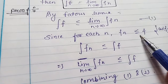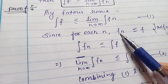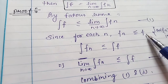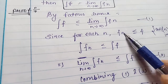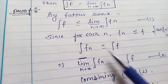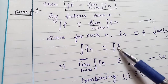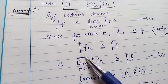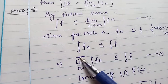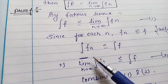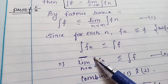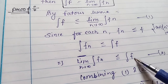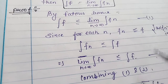Now, since fn is an increasing sequence, for each n we have fn less than or equal to f. This means if you take the integral of both sides, then the integral of fn is less than or equal to the integral of f. Taking the limit superior as n tends to infinity, the integral of fn is less than or equal to the integral of f. This is our second equation.